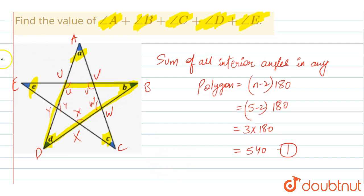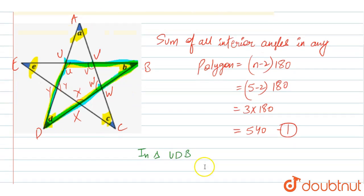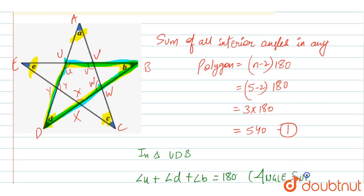In triangle UDB, we can write down the angle sum property: angle U plus angle D plus angle B equals 180° by the angle sum property. This is equation 2.